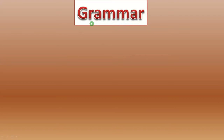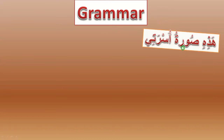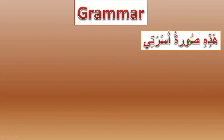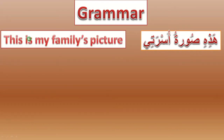Let's talk now about the grammar in Arabic. Let's see the example: هاذه سورة أسرتي means 'this is my family's picture.' You will note here that we put the possessed in the beginning and the possessor أسرتي after that.